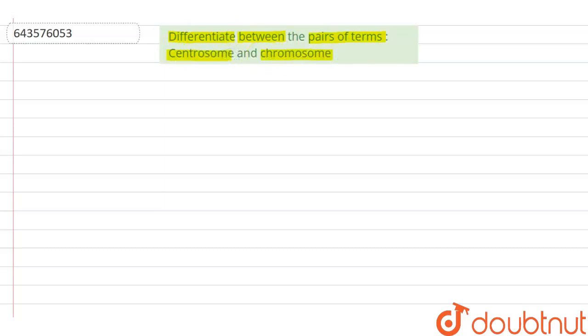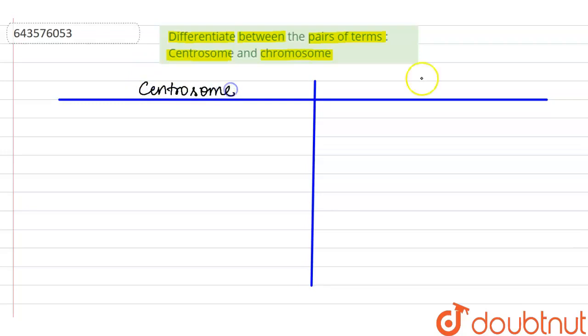So we will take two columns to differentiate. The first column will have the character of a centrosome. Second column will be for chromosome.